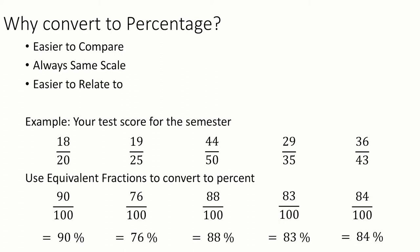Or the equivalent 90 percent, 76 percent, 88 percent, 83 percent, 84 percent. So we can automatically see that the 76 percent was our lowest, and our first test, the 90, was our highest.